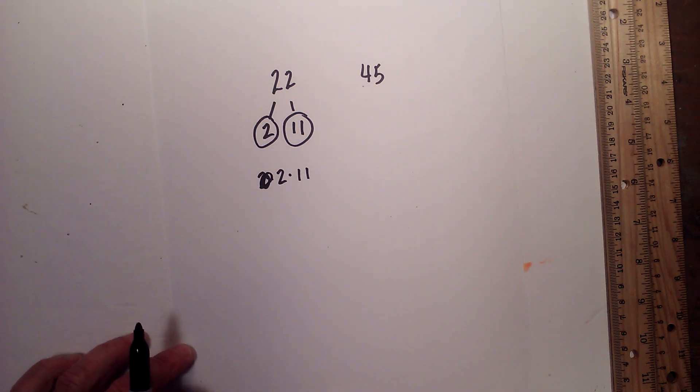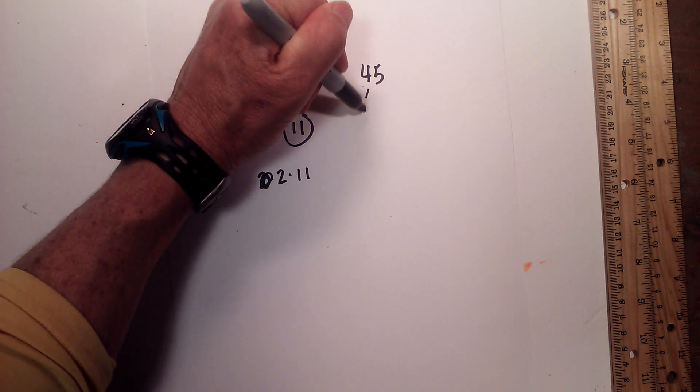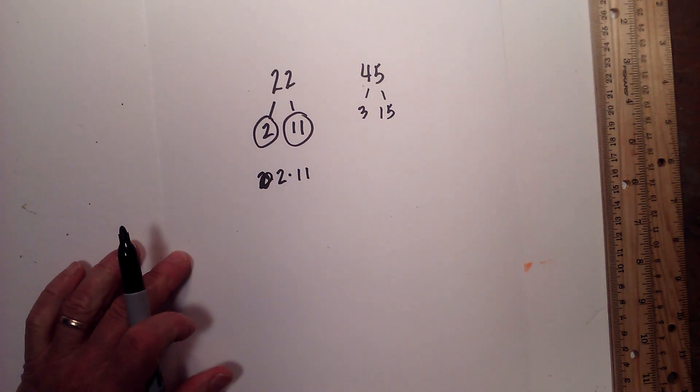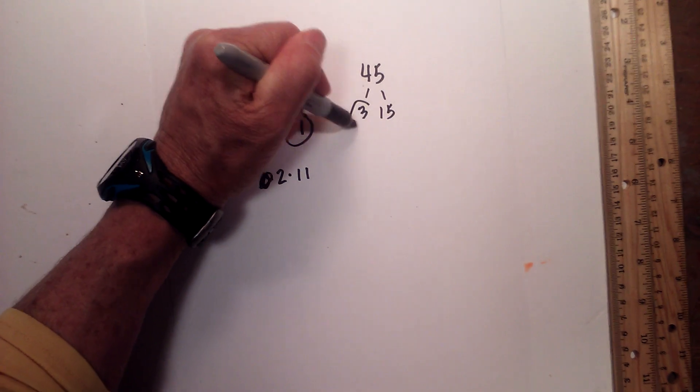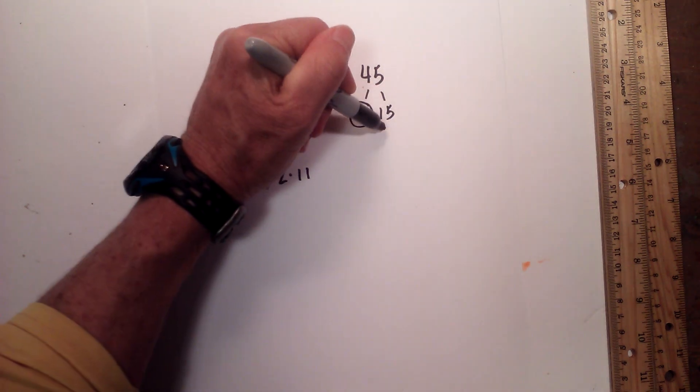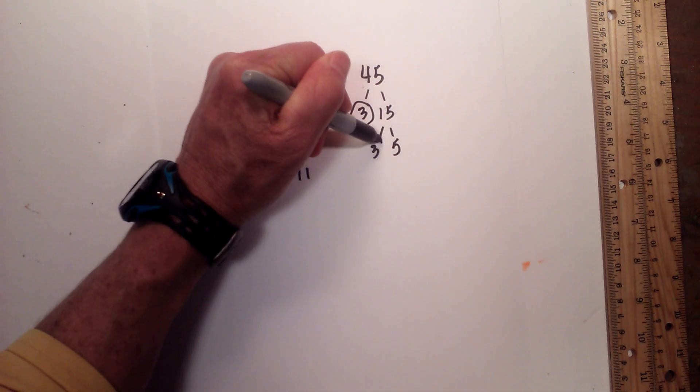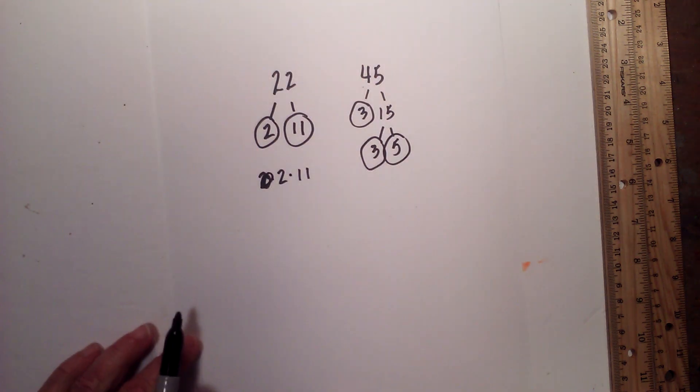So now let's move on to 45. Let's begin. 3 times 15 equals 45. Circle the 3 because it is prime. And now 3 times 5 equals 15. Circle the 3 and the 5 because they are prime.